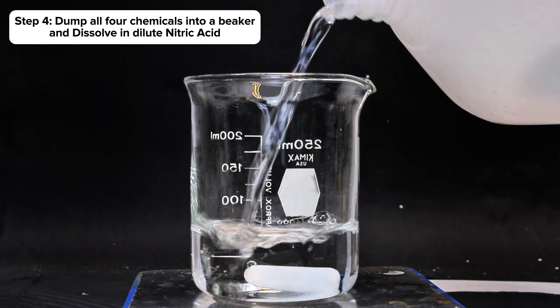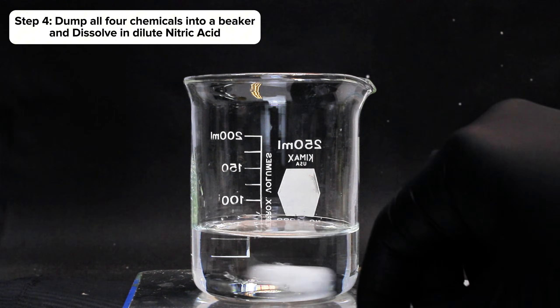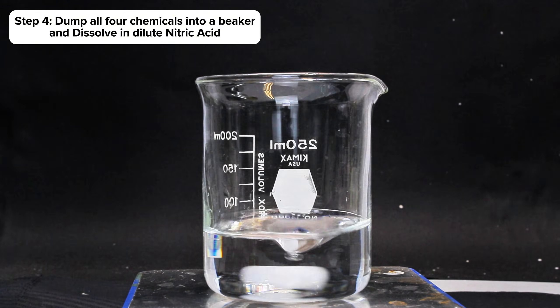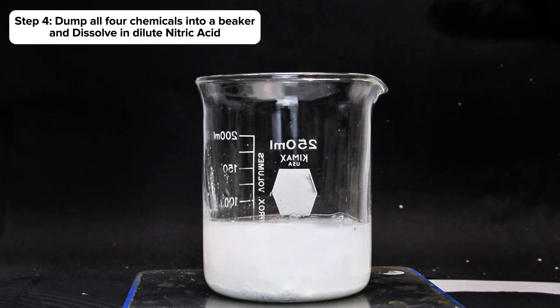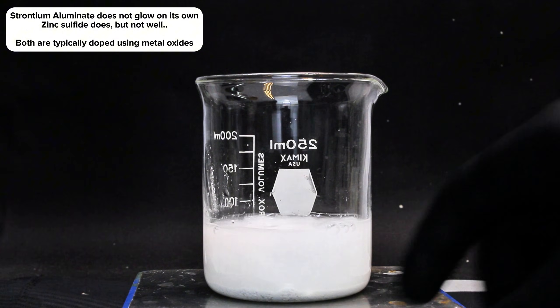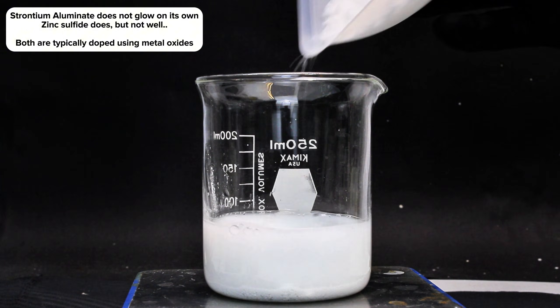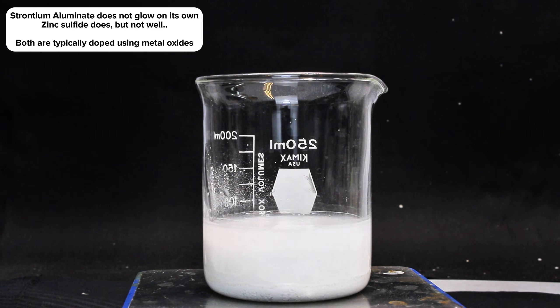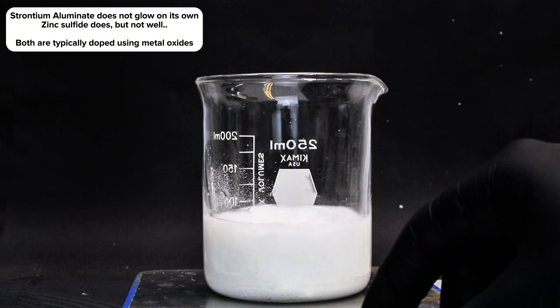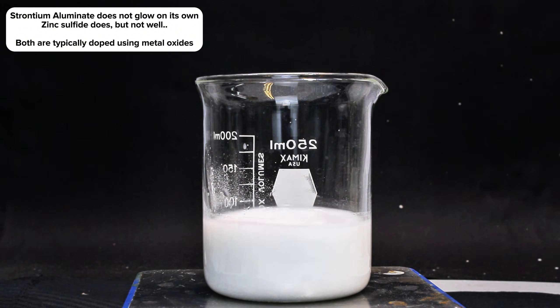Now while this is happening, I'm going to slow down for a second and explain what all is going on. One thing I didn't mention earlier in the video is that strontium aluminate does not glow on its own, and zinc sulfide doesn't glow all that well alone either. To obtain a long-lasting glow or to modulate the color of light produced, both zinc sulfide and strontium aluminate are typically doped with tiny amounts of specific metal oxides.